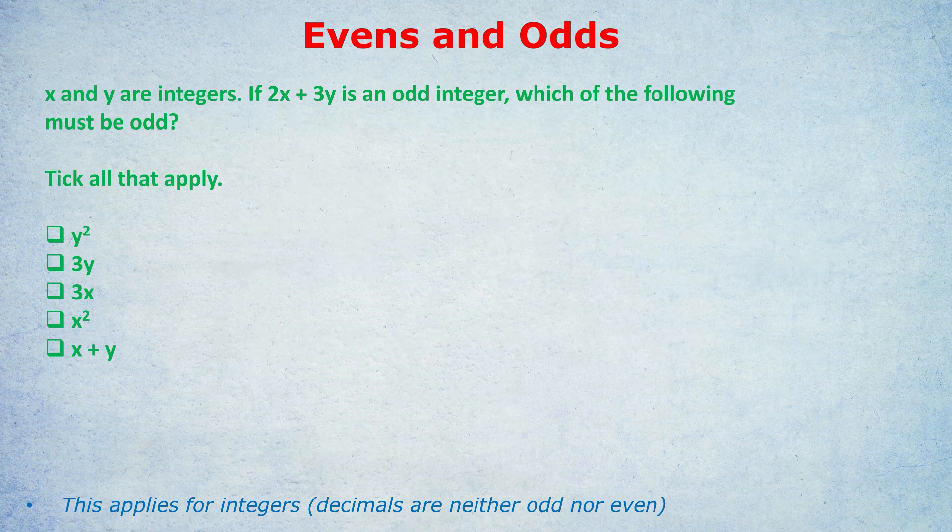X and Y are integers. If 2X plus 3Y is an odd integer, which of the following must be odd? Tick all that apply. Can you remember the even and odd rules? There were four in total, but just the first two are the most essential.